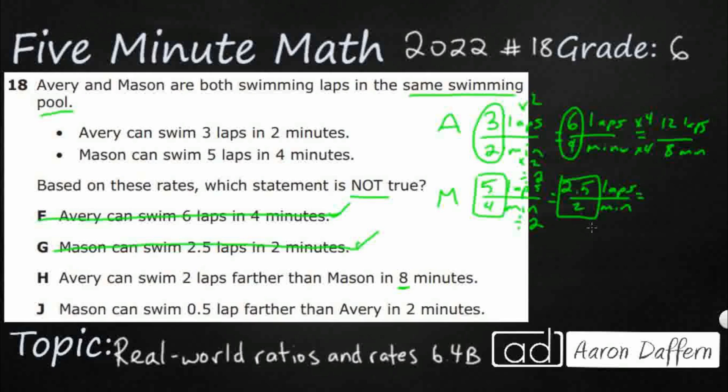And this is going to be times 2 by the original to get up to 8 minutes, times 2 by the original to get 10 laps. So in 8 minutes, Avery can actually swim farther. Avery can swim 2 laps farther. That's exactly what it is, 12 and 10. So that is correct, which means that's not the answer we're looking for. We're looking for the one that's not true. So let us hope the answer is J.